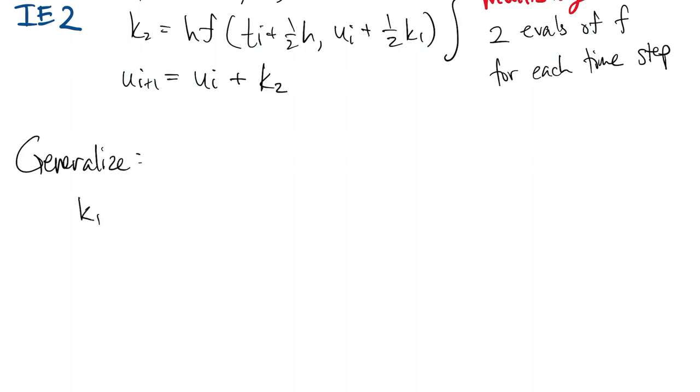We can generalize from IE2 to a method with S stages. Each stage may depend on the ones that came before it, and may take place at a different time between Ti and Ti plus 1.